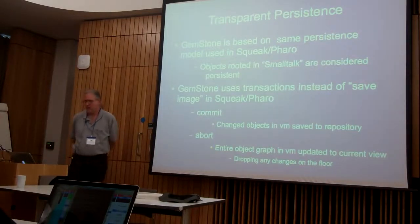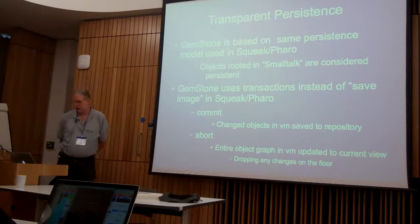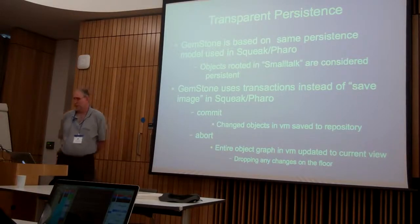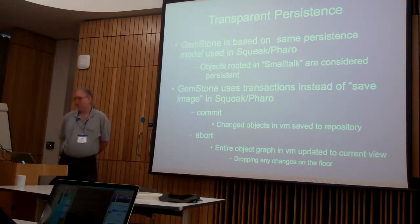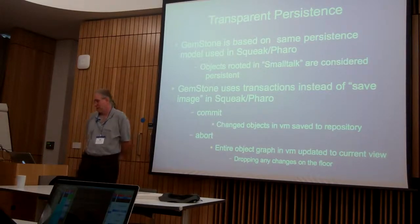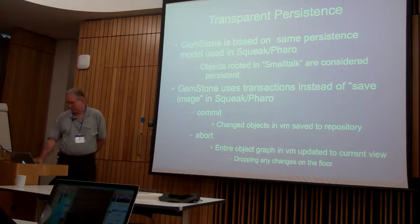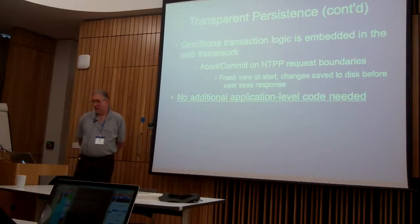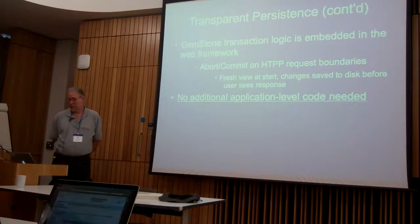When I talk about transparent persistence, Gemstone uses the same persistence model used in Squeak and Pharo. Objects rooted in Smalltalk are considered persistent in Gemstone just as they are when you save your image in Squeak or Pharo. But the difference is that Gemstone uses transactions instead of save image. On a commit, the changed objects in a VM are saved to the repository. On an abort, the entire object graph is updated to the current view, dropping any changed objects.